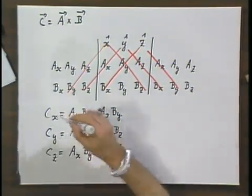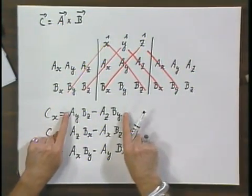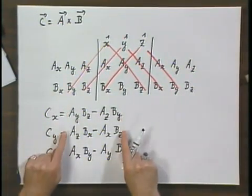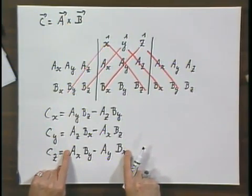The vector C — of which this is the X component, this is the Y component, and this is the Z component — must be perpendicular to A, it must be perpendicular to B, and its magnitude must equal the magnitude of A times the magnitude of B times the sine of the angle. It better be, because that is what I told you earlier — that is what a cross product is all about.